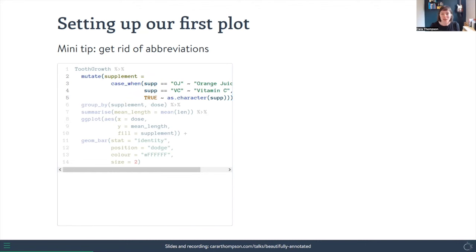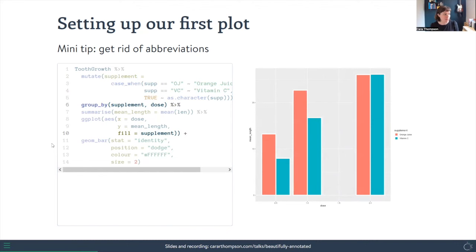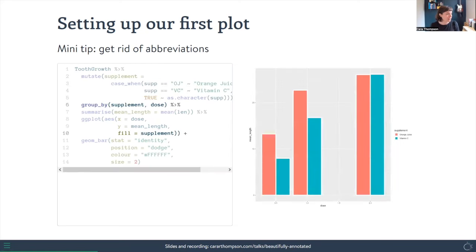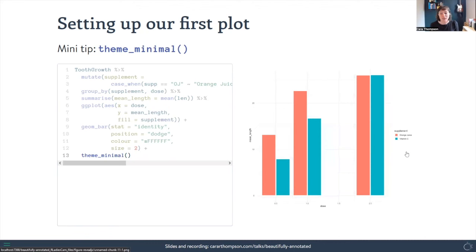The first tip is to get rid of abbreviations if you can. We do a quick mutate to create a supplement variable that translates 'OJ' into 'Orange Juice' and 'VC' into 'Vitamin C', so when we plot it things are clearer. We then make sure the plot groups and fills use that new variable. You can see we've gone from 'OJ' and 'VC' to 'Orange Juice' and 'Vitamin C' — a nice way to make sure your data lines up with your plot intuitively.